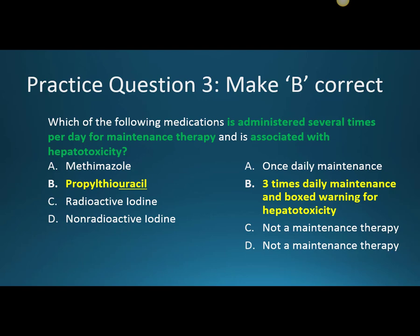Our next question relates to PTU: which medication is administered several times per day for maintenance therapy and is associated with hepatotoxicity? Both iodines — radioactive and non-radioactive — are not used for maintenance therapy. Of the maintenance medications, methimazole is used once a day, while propylthiouracil is used three times a day and carries a black box warning for hepatotoxicity.